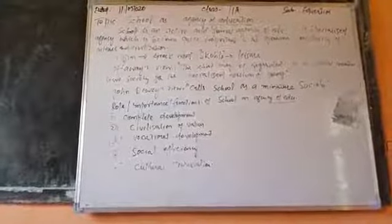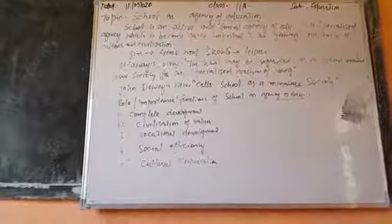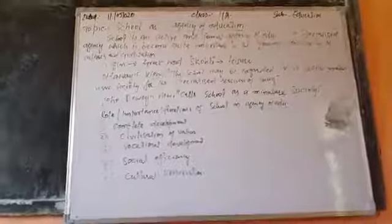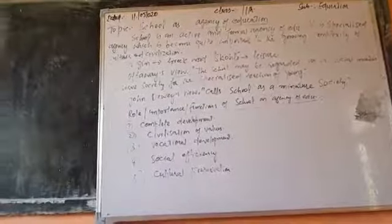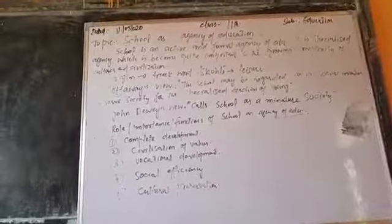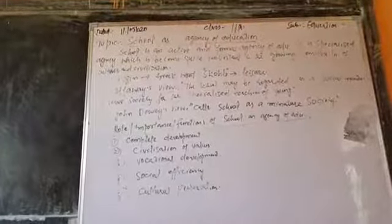But gradually, as society developed and complexity grew, a need emerged in society. There was a need for a social institute — the need was felt that there should be a social institute whose specific work would be to provide education, to provide knowledge, to involve itself in the process of teaching and learning. And so the concept of school emerged.